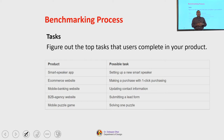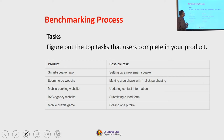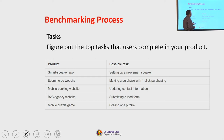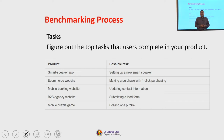The second step is to define tasks — figure out the top tasks that users complete in your product. For example: for a smart speaker application, a possible task is setting up a new smart speaker; for an e-commerce website, making a purchase with one-click purchasing; for a mobile banking website, updating contact information; for a B2B agency website, submitting a lead form; and for a mobile puzzle game, solving one puzzle.